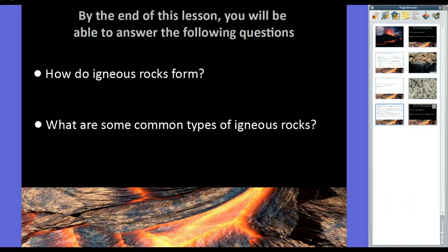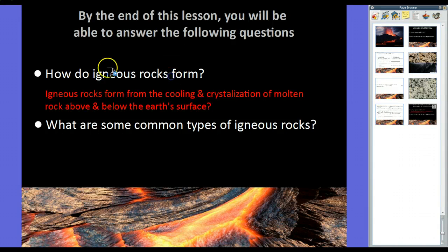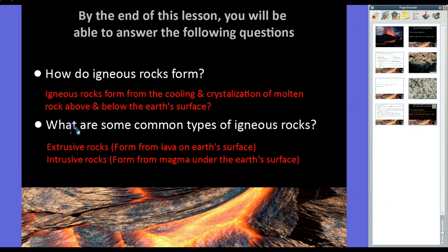So, like I said, really short lesson. By the end of this lesson, you should have been able to answer the following questions. First off, how do igneous rocks form? Well, igneous rocks form from the cooling and crystallization of molten rocks both above and below the Earth's surface. And some common types of igneous rocks are extrusive. They form from lava on the Earth's surface, and intrusive rocks that form from magma under the Earth's surface.